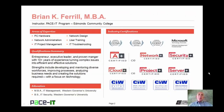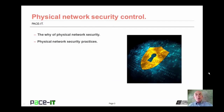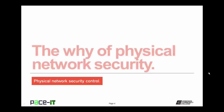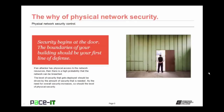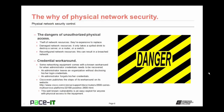Hello, I'm Brian Farrell, and welcome to PACE IT's session on Physical Network Security Control. Today we're going to discuss the why of physical network security and then move on to some physical network security practices. Your network security actually begins at the door — the boundaries of your building should be your first line of defense. If an attacker has physical access to the network resources, there is a high probability those resources can be breached. The level of security deployed should be driven by the amount of security needed, and as the need for overall security increases, so should the level of physical security.